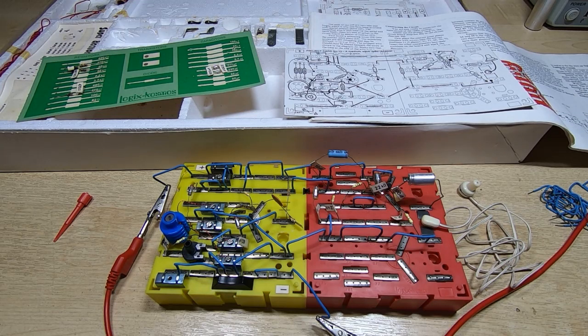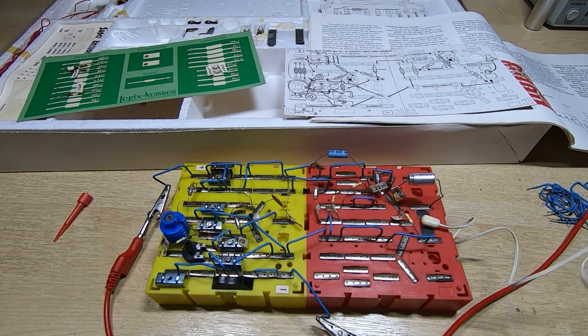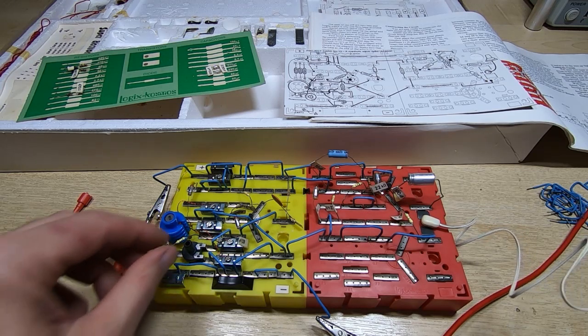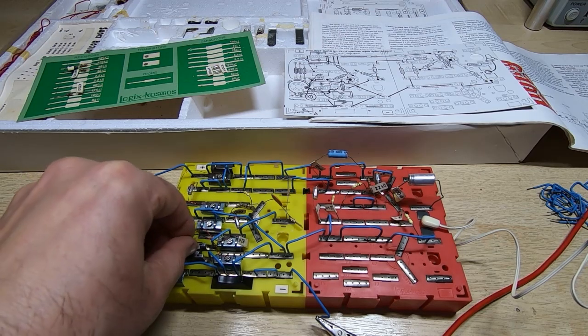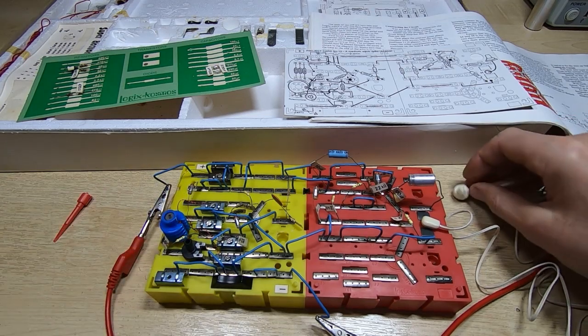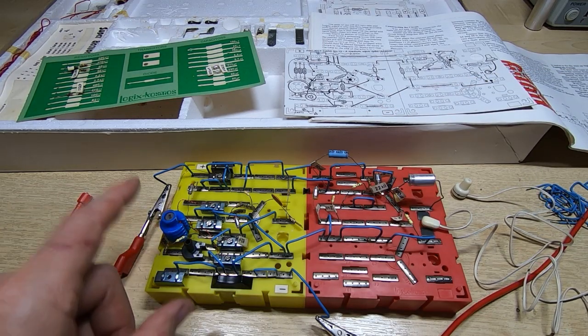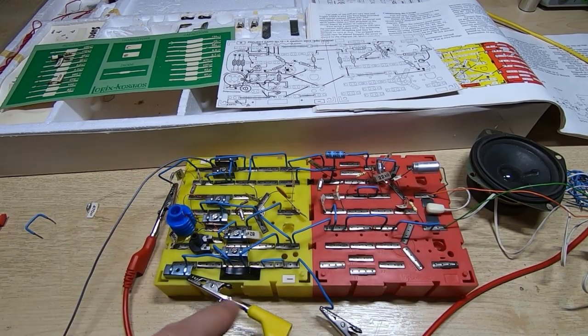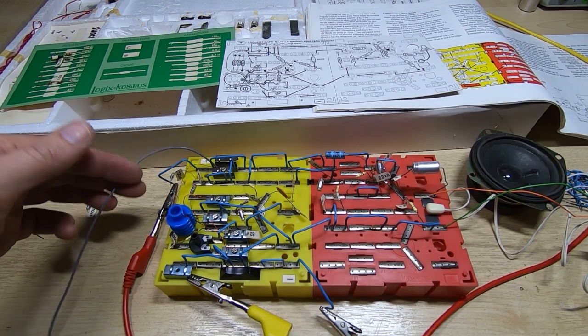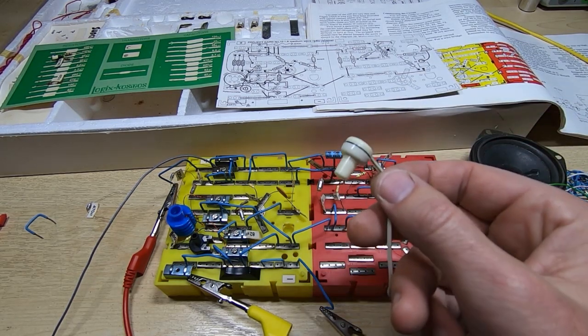I have the supply set to 4.5 volts. I'll switch it on and see if I can hear anything in the earpiece. I'm getting a crackle when I turn the pot, so I'm now going to hook up an aerial and a ground and see if we can receive anything. I've got a good ground attached, I've got an antenna attached, and I've been tinkering with the tuning and I can now actually hear a radio station.